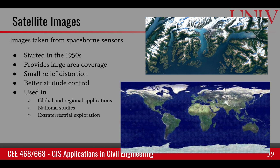The advantage of satellites is that they provide large area coverage. Because they are very far away from the ground, the relief distortion or relief displacement is very minimal compared to airborne images. Satellites are in space, so there's no wind, meaning better attitude control — no roll, yaw, or pitch distortions as discussed in the case of aerial images. Satellite data is more popular for global, regional, and national level studies for large countries, and is also used for extraterrestrial exploration.